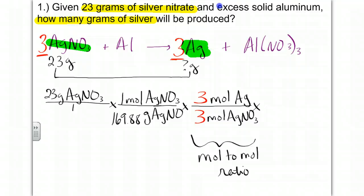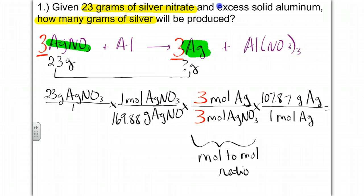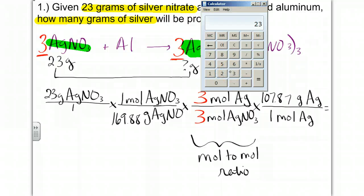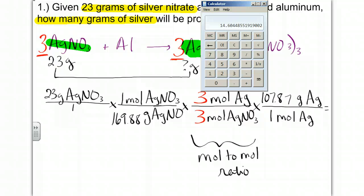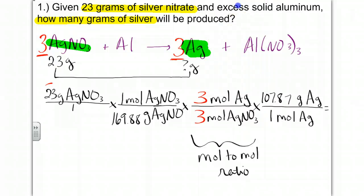There are three moles of silver nitrate to three moles of silver. We have one more step because they want the answer in grams. We'll bring down moles of silver — it's always one mole except in the mole-to-mole ratio — and go to grams of silver; from the periodic table that's 107.87. To calculate: 23 divided by 169.88, times 3 divided by 3 (which cancels out), times 107.87 gives 14.6. Because our given has two sig figs, our answer is 15 grams of silver.